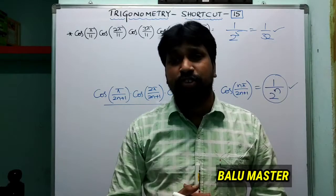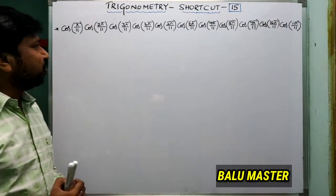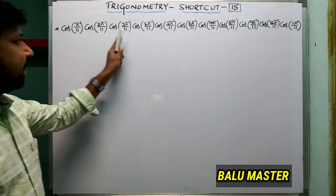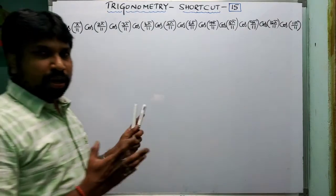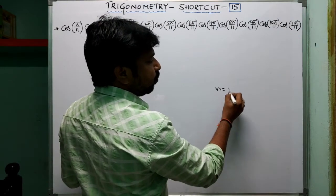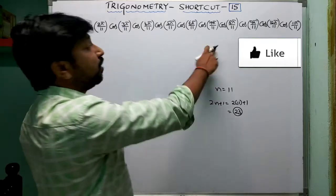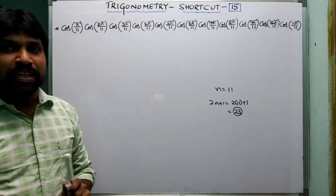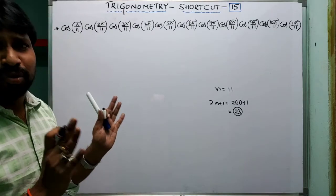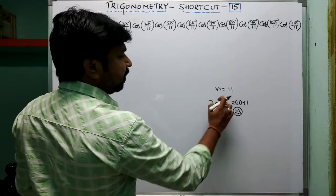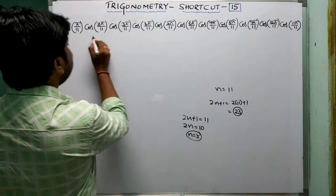For JEE-type questions, they ask more complex forms. The question is: cos(π/11) · cos(2π/11) · cos(3π/11) · ... · cos(10π/11). Is the formula applicable? If we take n = 10, we need 2n+1 = 21, but the denominator given is 11, not 21. So this formula is not directly applicable. When the formula is not applicable, we convert the terms into our standard formation. With denominator 11, we have 2n+1 = 11, so n = 5 — the formula is applicable only up to cos(5π/11).